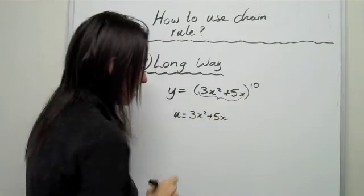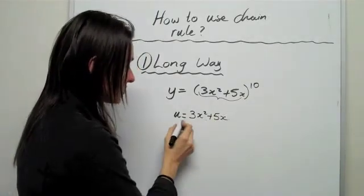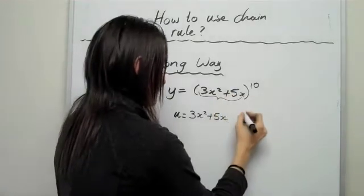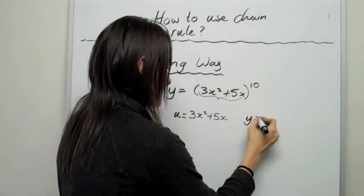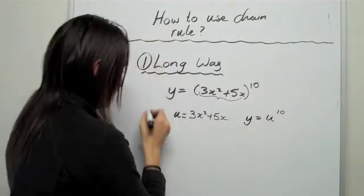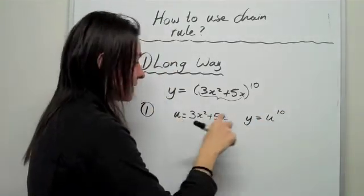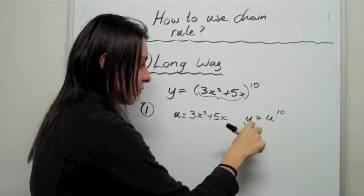After we've got u, what we can do is, we can substitute just a letter in, instead of having all of this expression, we can go y is equal to u to the power of 10. So that's the very first thing that we do. So we've defined u in terms of x, and we've defined y in terms of u.